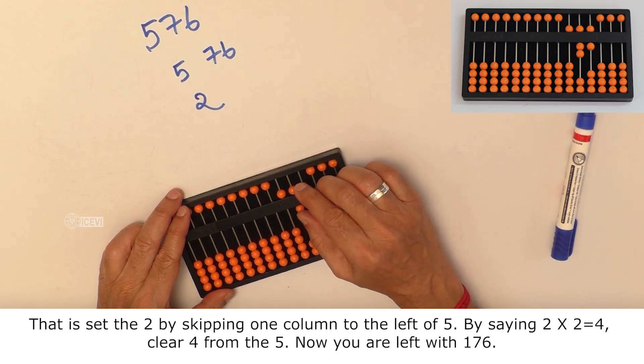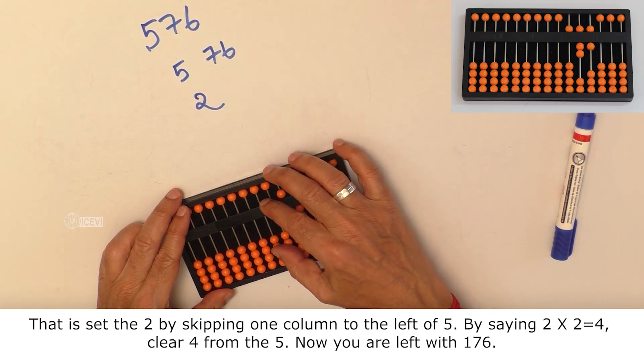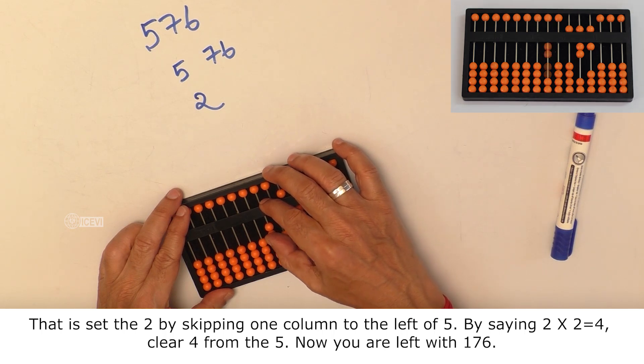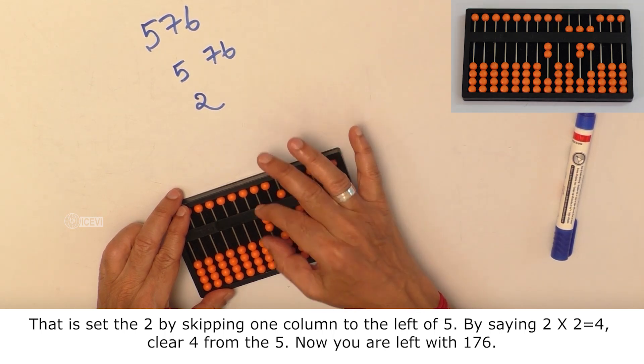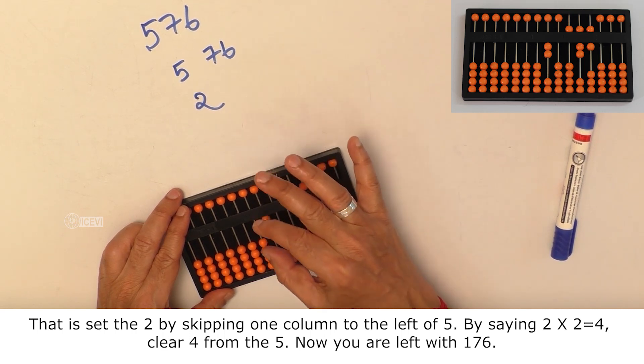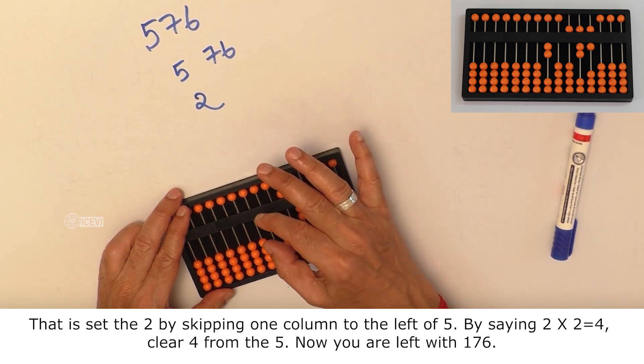That is, set 2 by skipping a column to the left of 5. By saying, 2 multiplied by 2 equals 4.